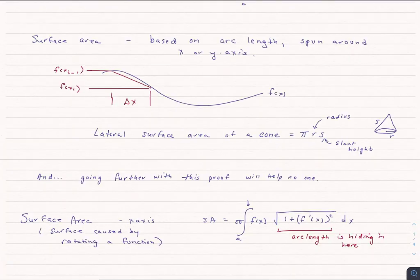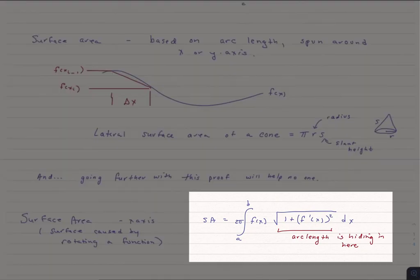I'm a big fan of showing proofs when I think it offers something. This proof gets so lost in the details that I don't think it's worth going through. So you're just going to trust me when I say the surface area of a shape formed by a function spun around the x-axis is given by this.